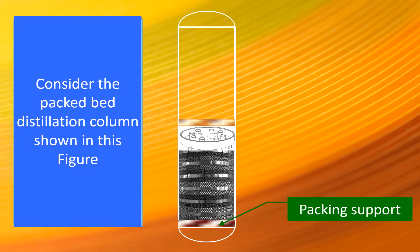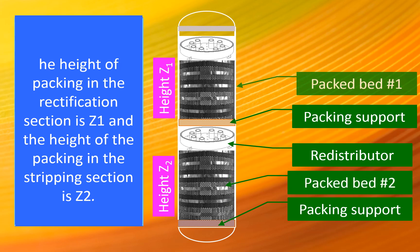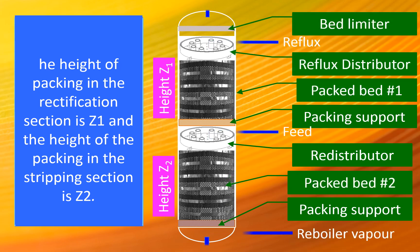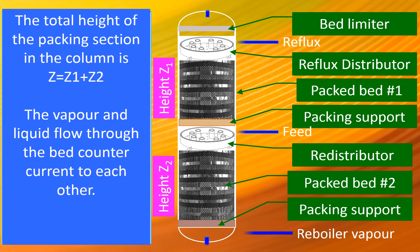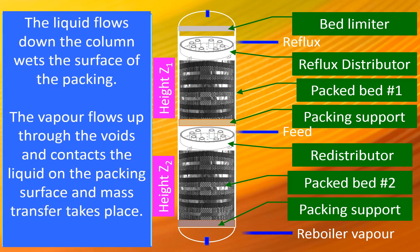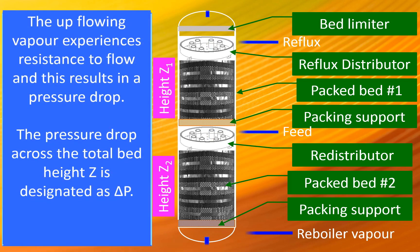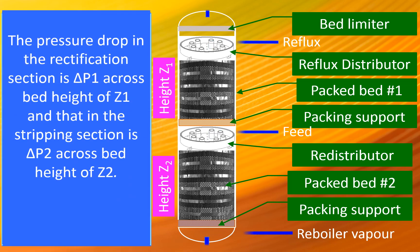Consider the packed distillation column shown in this figure. The height of packing in the rectification section is Z1 and the height of packing in the stripping section is Z2. The total height of packing section in the column is Z, which is equal to Z1 plus Z2. The vapour and liquid flow through the bed countercurrent to each other. The liquid flows down the column, wetting the surface of the packing. The vapour flows up through the voids and contacts the liquid on the packing surface, and mass transfer takes place. The upflowing vapour experiences resistance to flow, resulting in pressure drop. The pressure drop across the total bed height Z is designated as delta P. The pressure drop in the rectification section is delta P1 across the bed height of Z1, and that in the stripping section is delta P2 across the bed height of Z2.